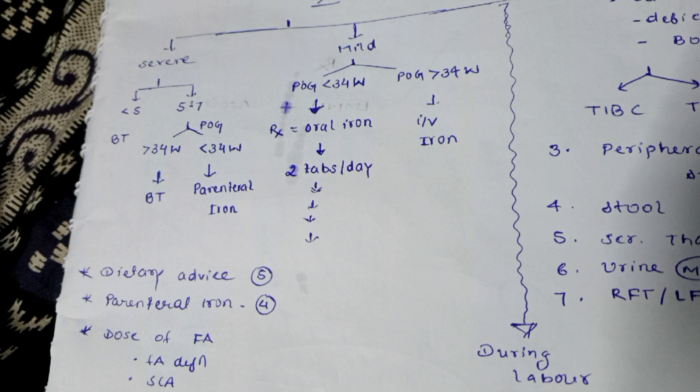During labor, management of an anemic pregnant mother includes keeping the patient in proper position, giving oxygen, providing analgesia for pain relief, monitoring vitals, restricting per vaginal examination and other examinations to avoid bleeding. Instrumental delivery is preferred to save time and reduce bleeding. Active management of the third stage of labor (AMTSL) is also performed.